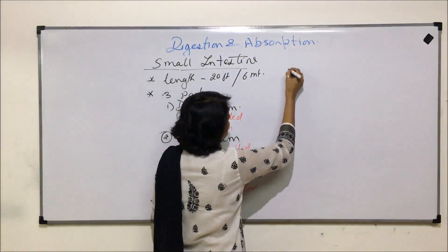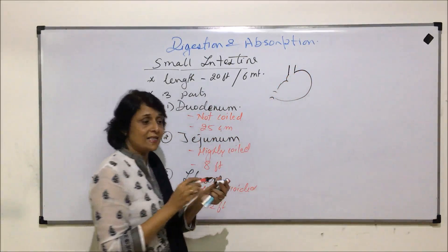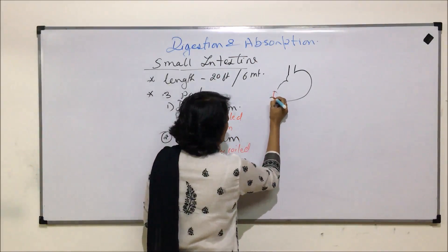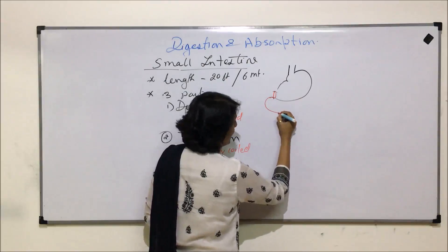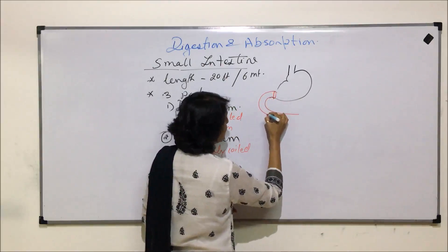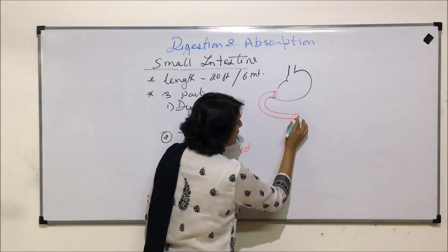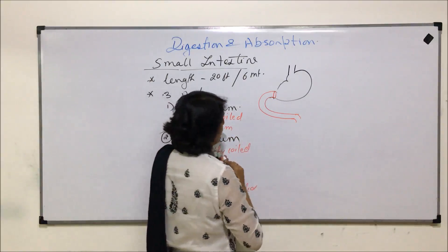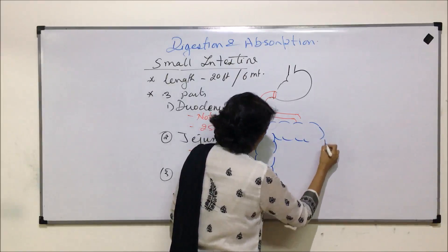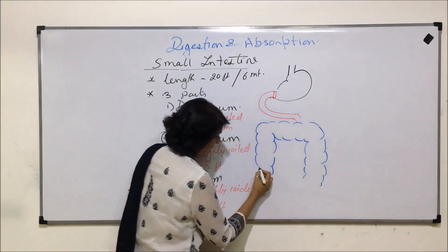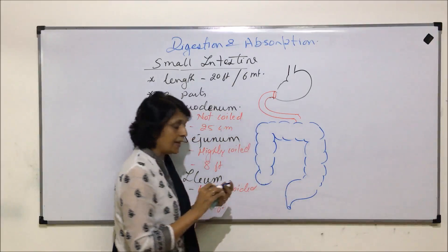The esophagus opens into this bag-like structure, that is the stomach. And the stomach leads into the small intestine, where we have the sphincter called the pyloric sphincter. Looking at the diagram, we can see the duodenum, then the coiled part, then the large intestine, and the last part of the large intestine — that is the rectum — and this is the anus.